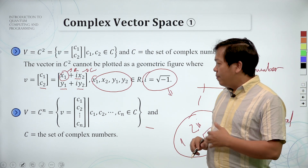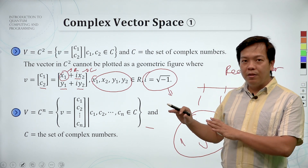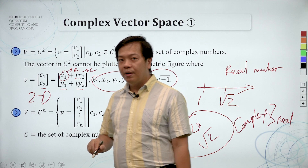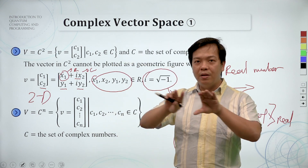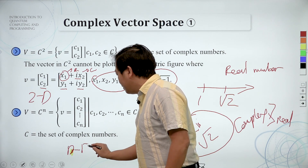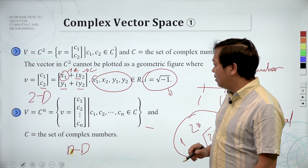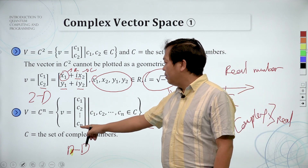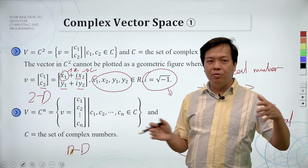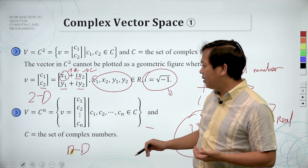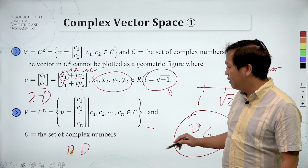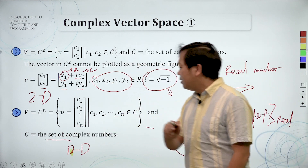When we want to represent a bigger space, right now we only see two dimensions. Now we want to extend to a bigger dimension. What about Vn? We have n dimensions: c1, c2, and cn. That means we have a very large vector. If we want to represent a bigger space, we can set the number of elements to be larger — it's going to be a set of complex numbers.